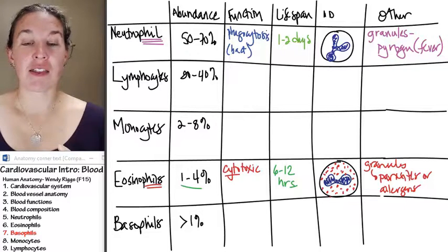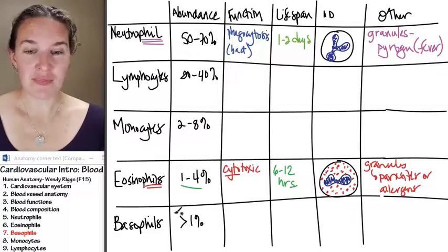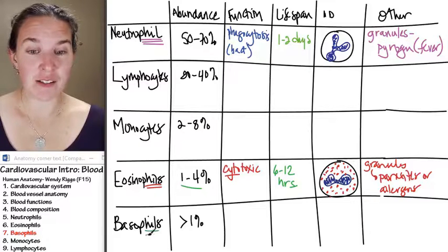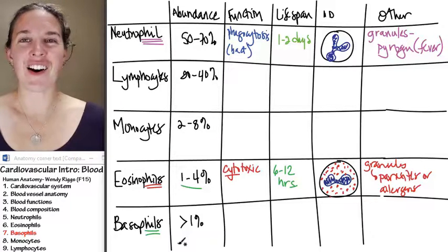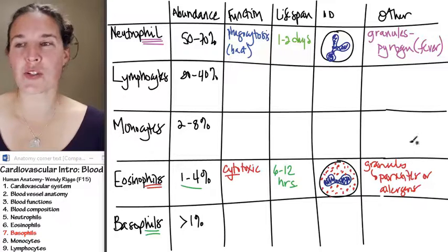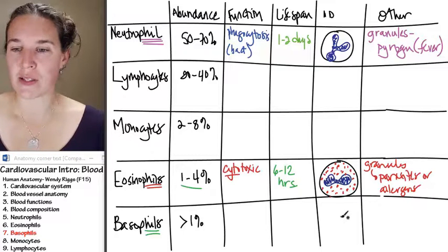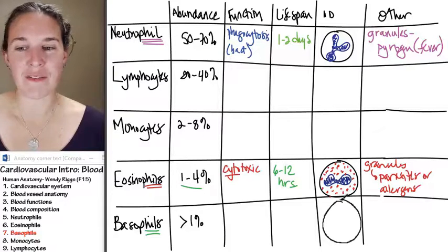Basophils are the least abundant of my fills, and they are super unbelievably obvious if you find one.